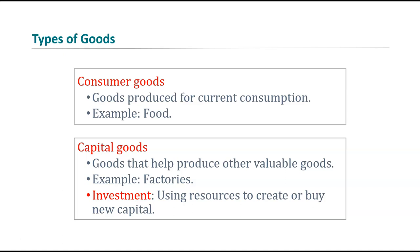Capital goods, on the other hand, are goods that help us produce other goods — our factories, our machines, things like that. Investment means using our resources to create or buy new capital. Capital isn't something we consume today, but it helps us produce more things to consume. Investment means we give up some of our consumption today in order to buy new capital goods so that tomorrow we can produce more consumer goods and consume more.